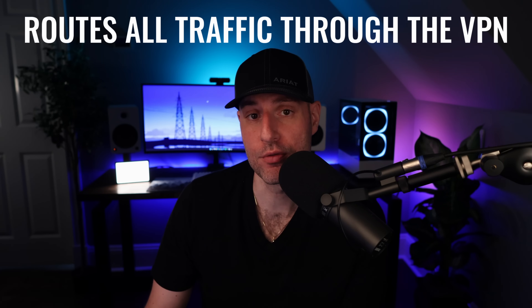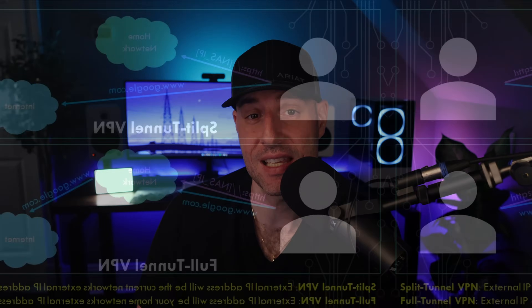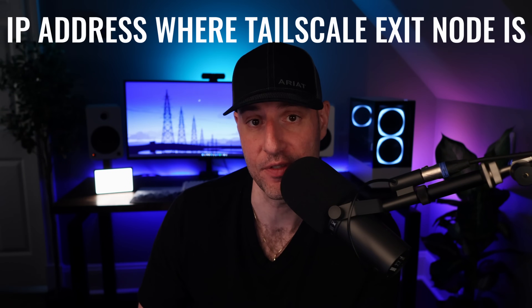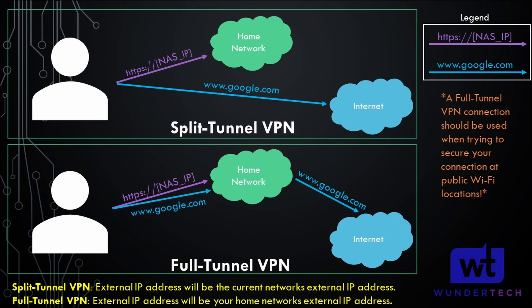After configuring local subnet access, we also configured the exit node in that same command. An exit node routes all traffic through the network where Tailscale is located — think of it as a full tunnel VPN. With a full tunnel VPN, all traffic goes through the VPN, so your external IP address becomes the IP where Tailscale is configured. With a split tunnel VPN, which is how Tailscale normally works, only traffic destined for the local subnet or a Tailscale device is routed through Tailscale. An exit node is helpful when you're on public Wi-Fi and want to secure your connection.